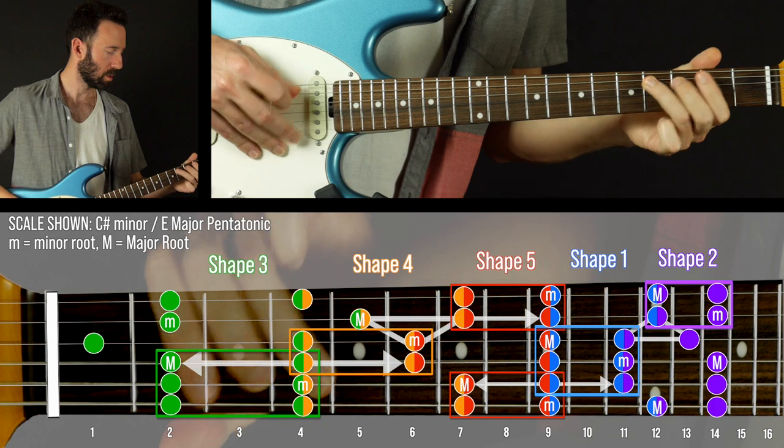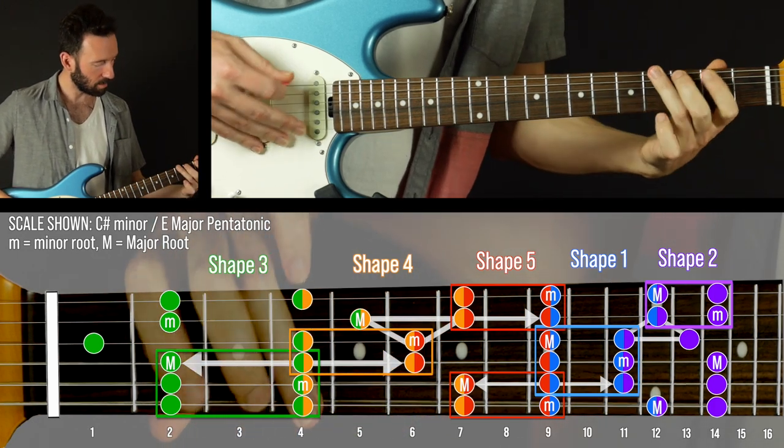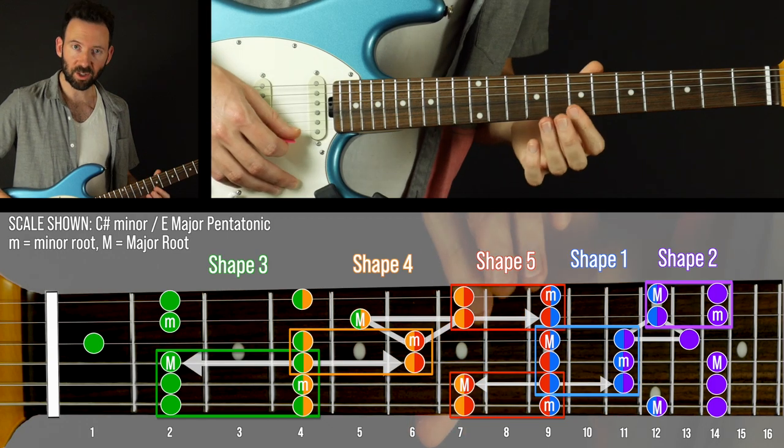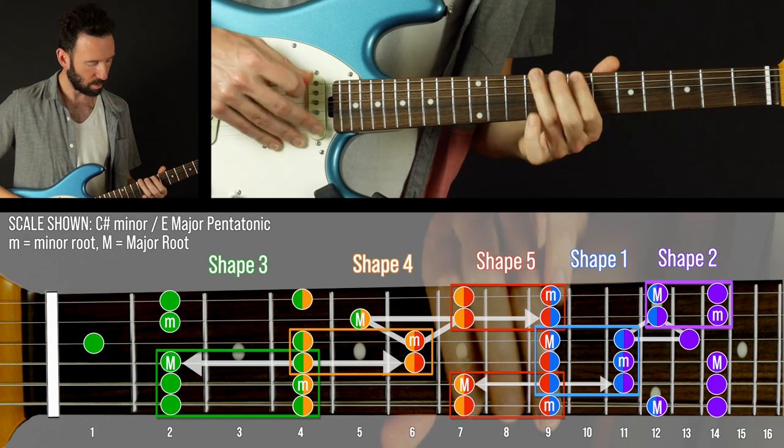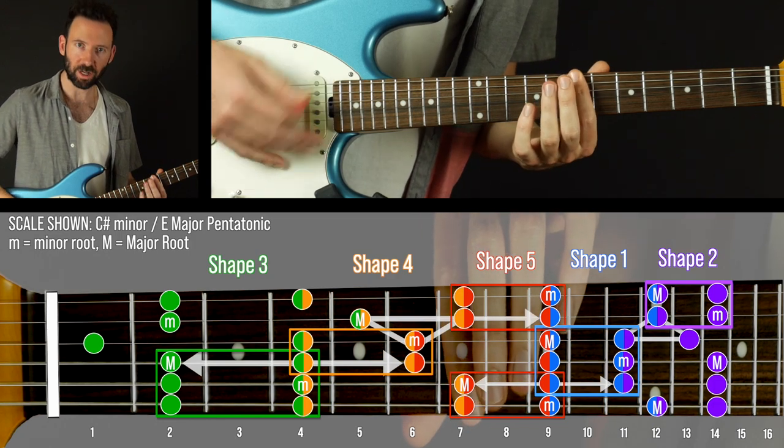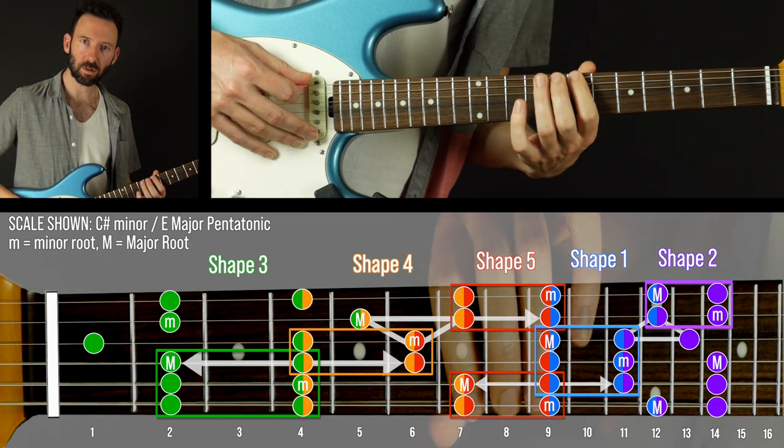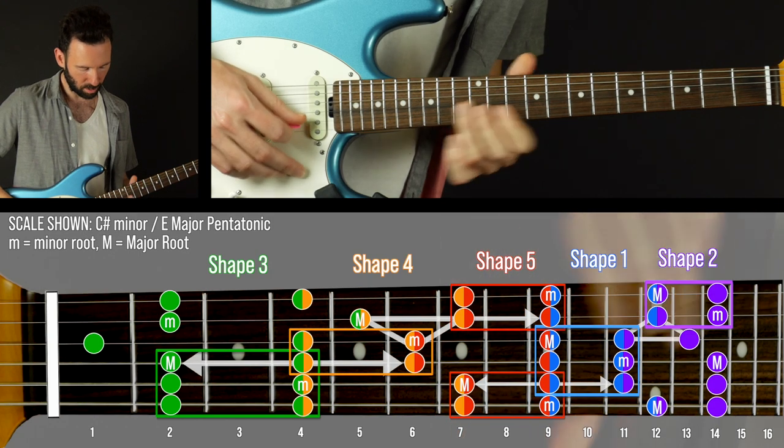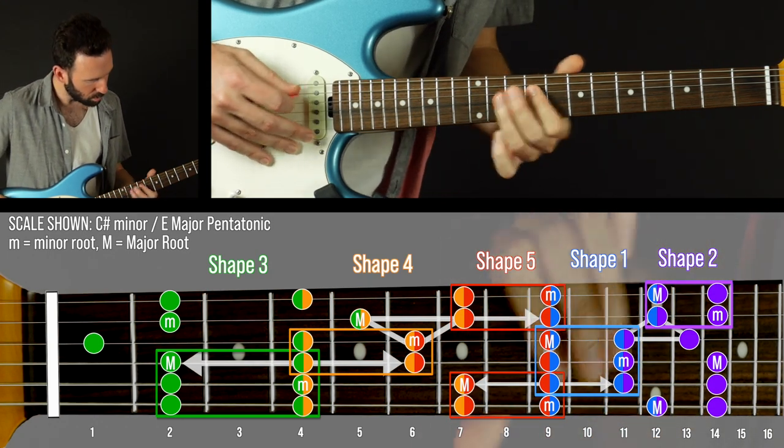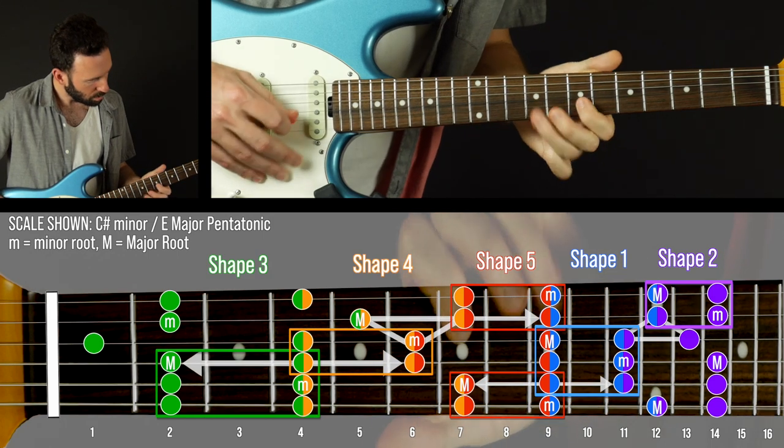So what I would recommend you do first, be able to play the two by two cells. Now the cool thing when you get to this one on shape five, we have the other cell on the lowest two strings. So you got a cell on the highest two and the lowest two. So putting it all together.